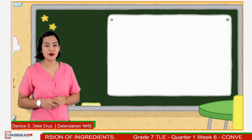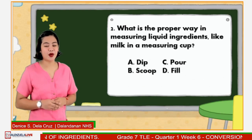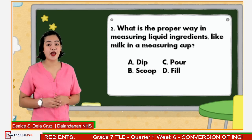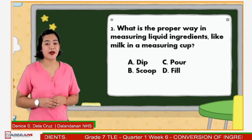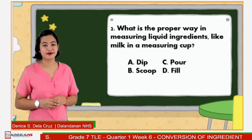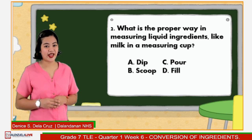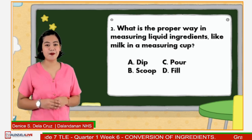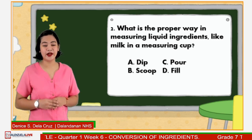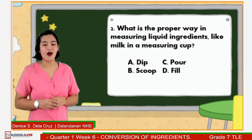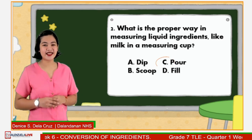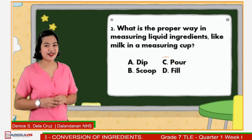Number 2: What is the proper way of measuring liquid ingredients like milk in a measuring cup? Letter A: Dip. Letter B: Scoop. Letter C: Pour. Or letter D: Fill. Excellent! The answer is letter C.